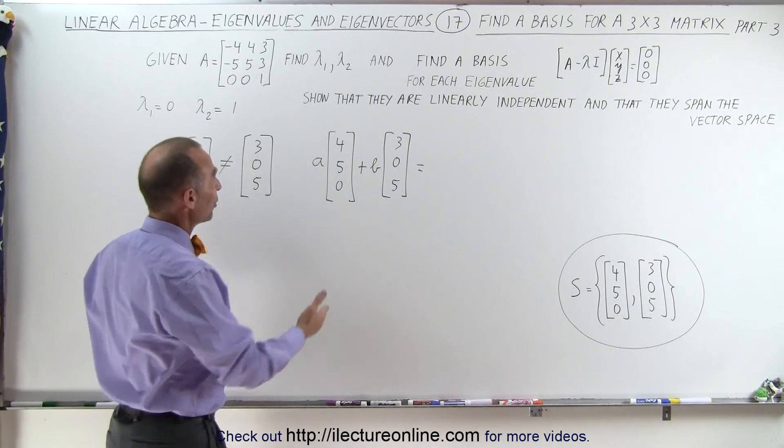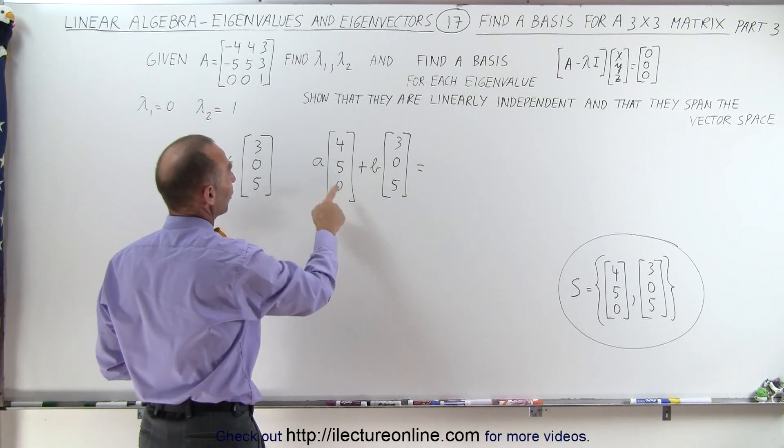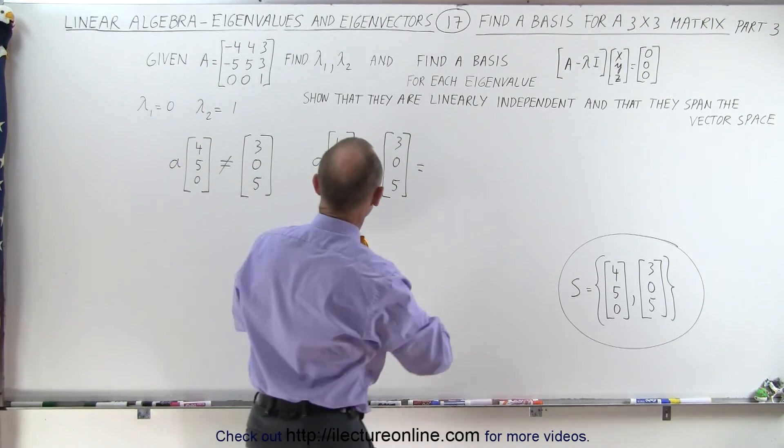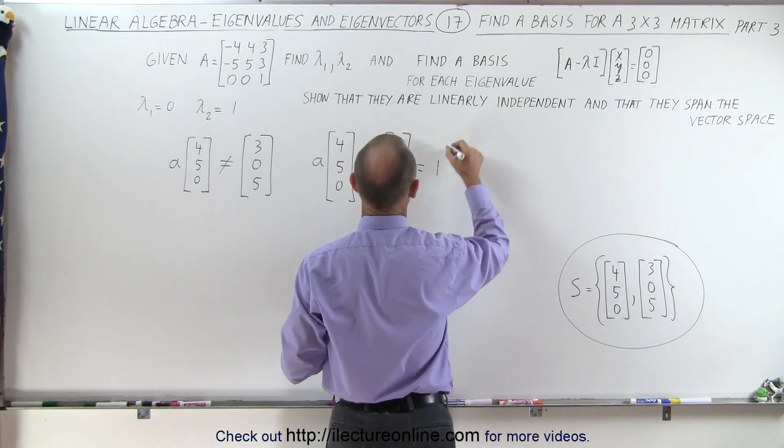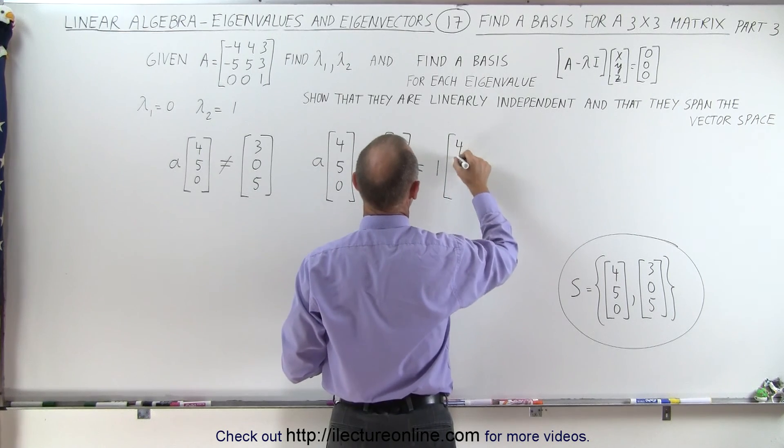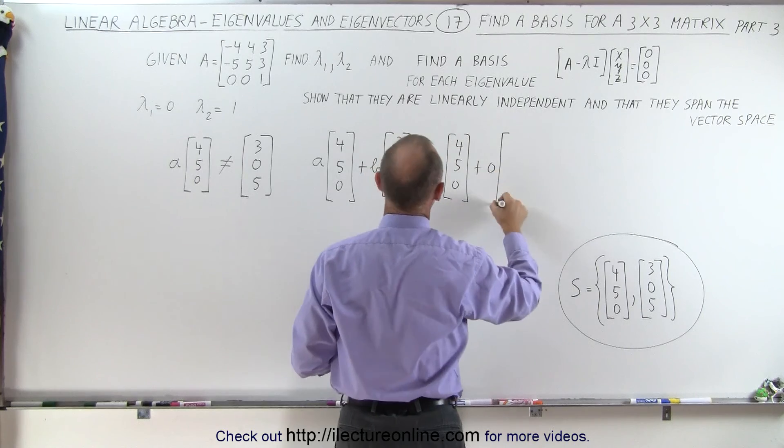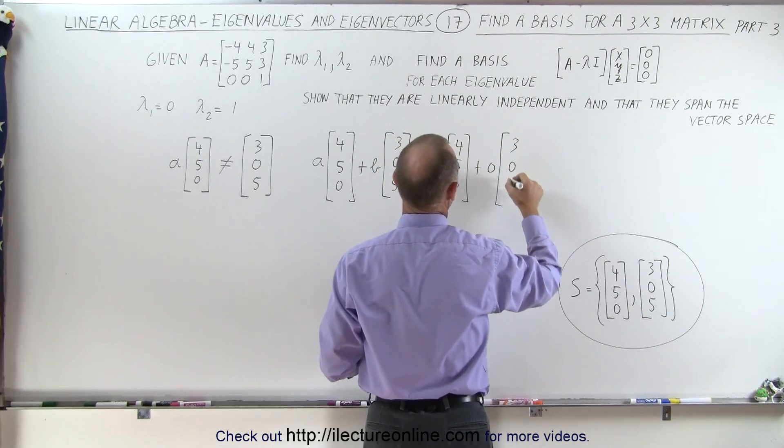So if I let a equals 1 and b equals 0 that makes it easy. So 1 times [4, 5, 0] plus 0 times [3, 0, 5].